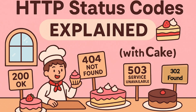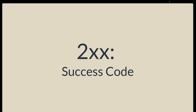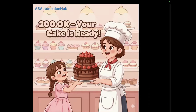Beginning with the 2XX series — the success family. Just think of it like your bakery received an order and everything went perfectly. The first status code is 200 OK. Think of it like a customer orders a chocolate cake and you deliver it exactly as promised. Everything went smooth — the order was received, processed, and delivered. That's a 200 OK moment.